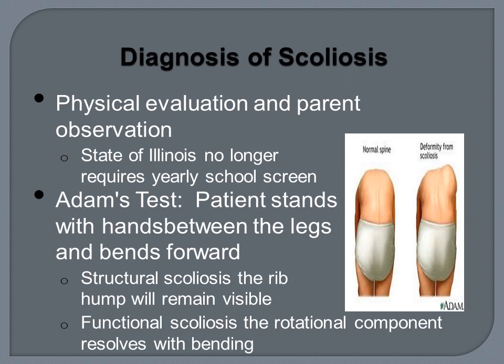Scoliosis is diagnosed through physician evaluation and parent observation. The state of Illinois no longer requires a yearly school screen, so it's important that children be screened at their yearly checkups and that parents be extra observant of their child's posture and back as they grow. The Adams test is the most common quick screen, where the patient bends forward with hands between the legs. If structural idiopathic scoliosis is present, the rib hump or elevated rib cage will remain visible. If a functional scoliosis due to muscle tightness or inflexibility is present, the rotational component will resolve with forward bending.